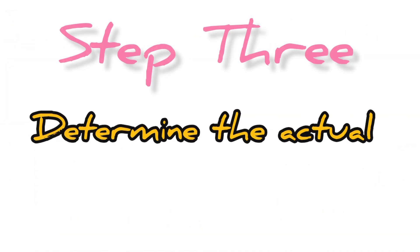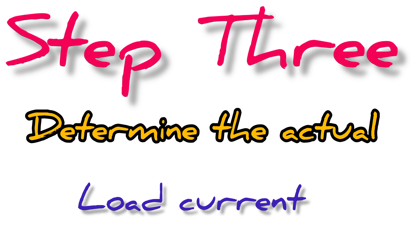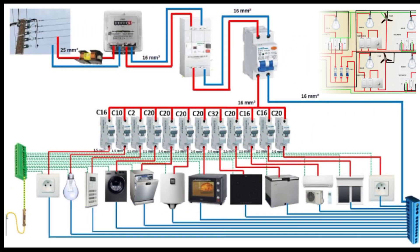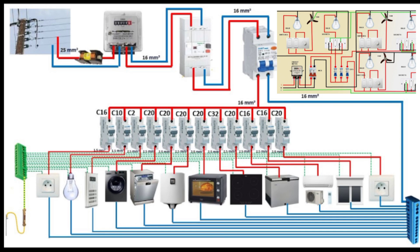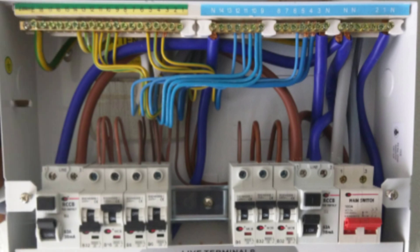The next step is to determine the current rating of the load demand. It is actually the current we are after in this calculation. We assume that all appliances will not operate at 100% efficiency, so we consider power factor. The current formula is: Current = Power divided by (Voltage times Power Factor). Typically in residential loads, power factor ranges between 0.85 to 0.95. We look for current because we want to know what size of cable can safely carry that amount of current.